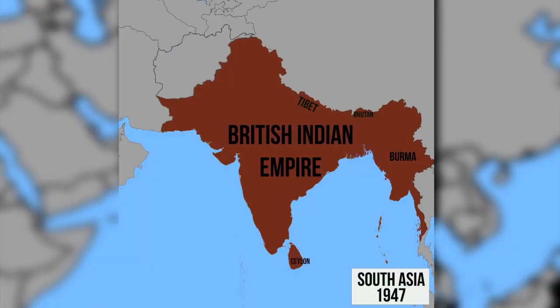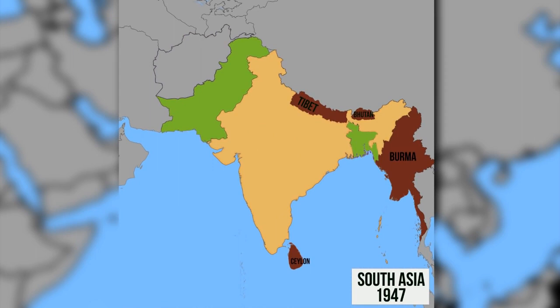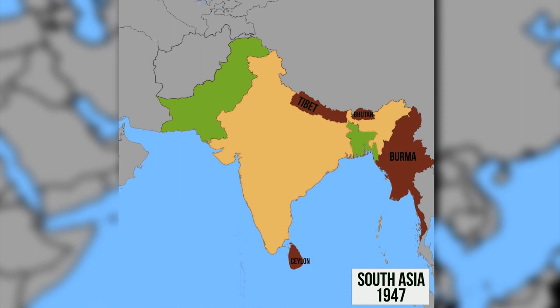To understand why this happened, one must go back 24 years, soon after the end of World War II, when the British colony of India achieved its independence from the United Kingdom. It was partitioned into the predominantly Hindu dominion of India and the mostly Muslim dominion of Pakistan.